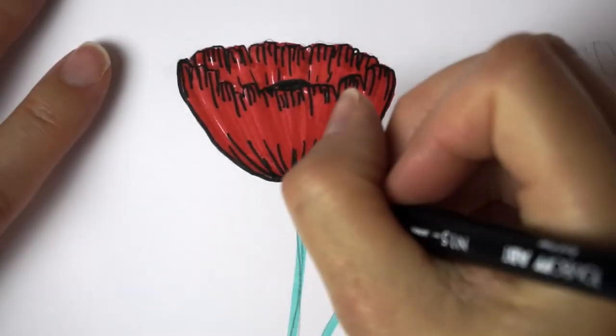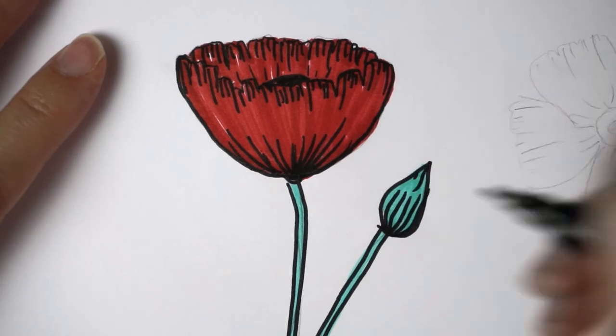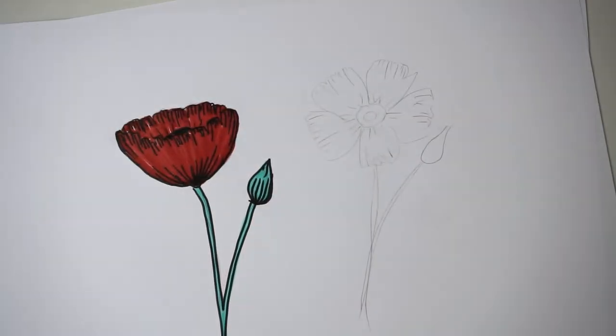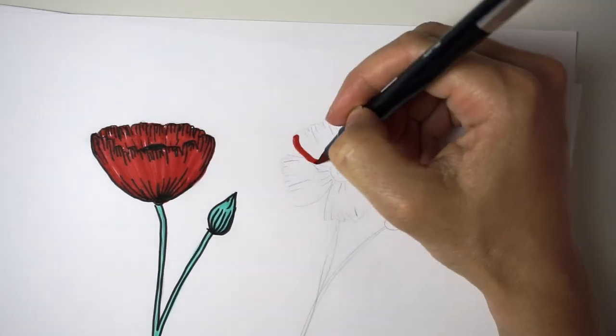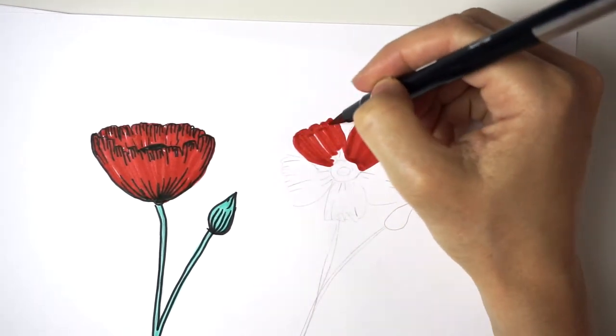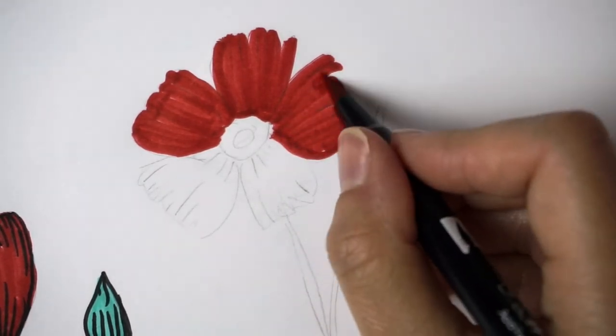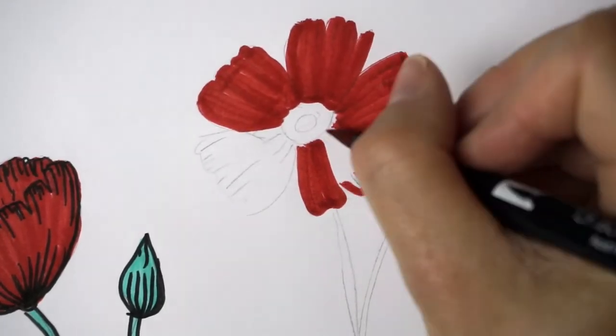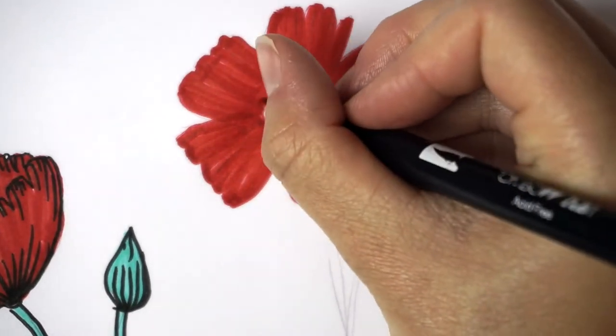So some are longer and some are shorter. And I also add more strokes there on the bud. I really like this version of the poppy flower. It looks more well made, but I would say this looks least like a poppy flower in real life.